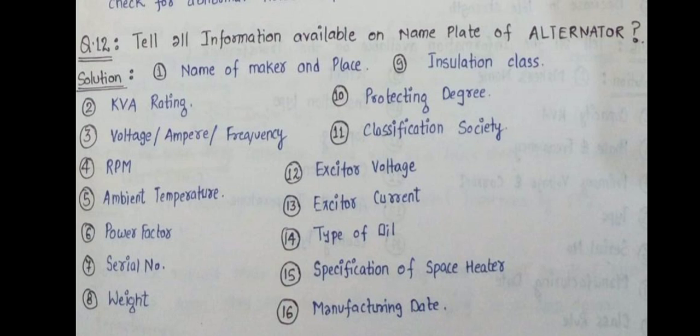In the case of the nameplate of an alternator, similarly we can say manufacturer's name, manufacturer date, serial number, type, classification society, capacity in kVA, voltage, ampere, frequency, RPM, ambient temperature, power factor, weight, exciter voltage, exciter current, type of oil, protection degree, and specification of space heater.